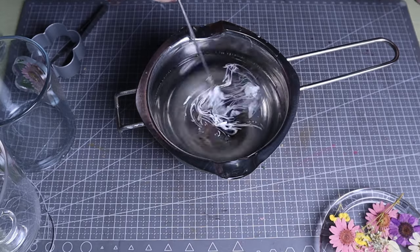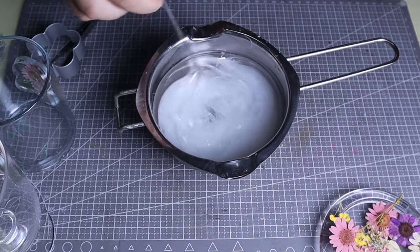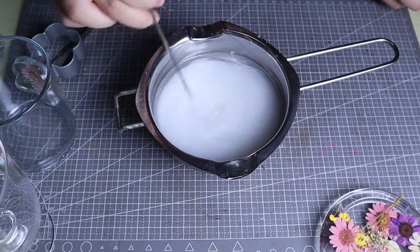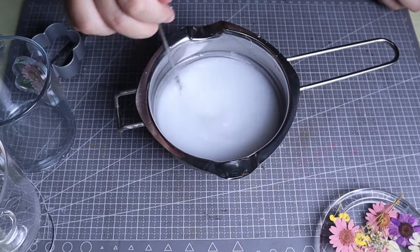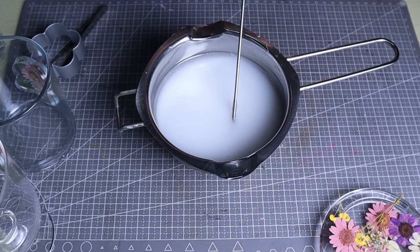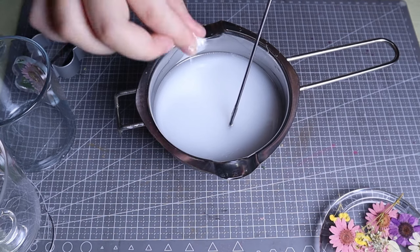I only have a set of liquid candle dyes and one white pigment. If you're the same and want to make other colors like me, I recommend using white pigment to make the gel wax opaque white first, then using the candle dye to create your favorite color. This is because air bubbles can't be seen in opaque white.